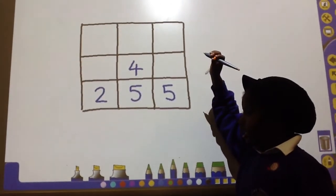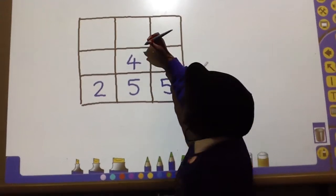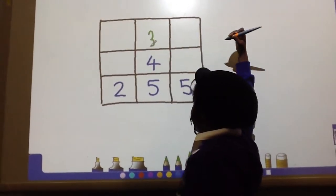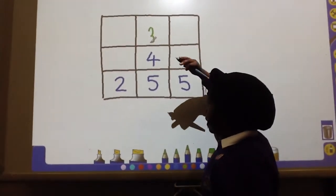And then now you could go diagonal this way or diagonal this way or diagonal this way.